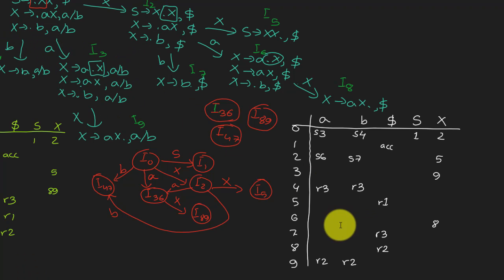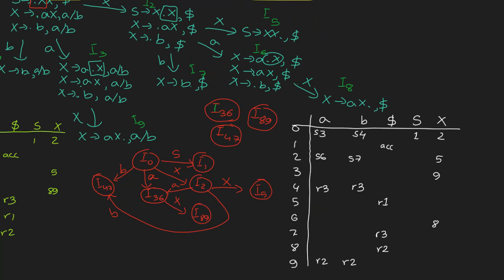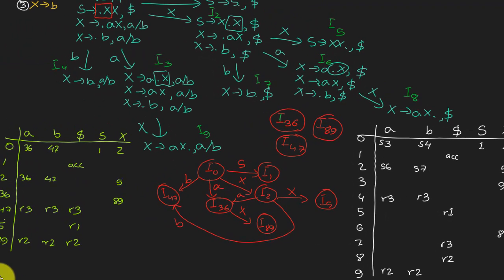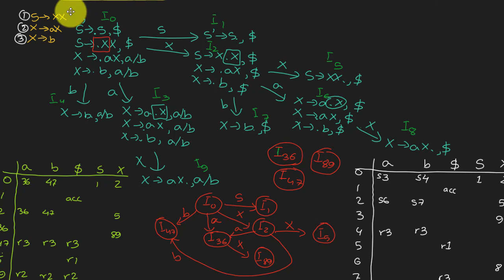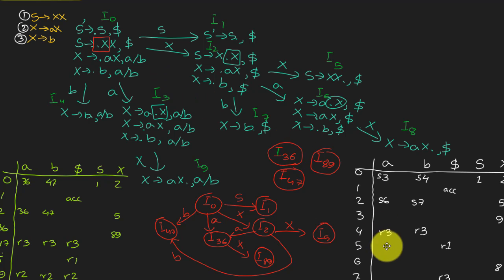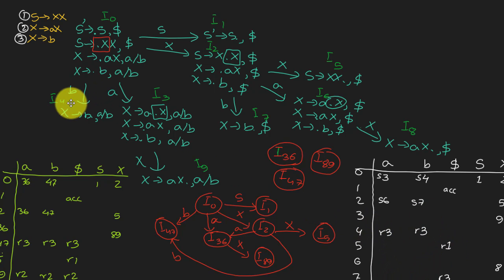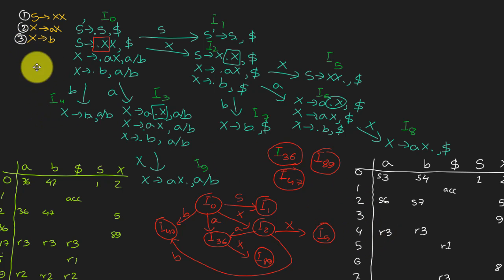Let's look at state 5. We number the rules like so — rule 1, R1, R2, R3, and so on. In state I5 the rule corresponds to rule 1. The look-ahead for state 5 is dollar, so under dollar we just put R1. Same goes for state 4 — the look-ahead is A and B, so under A and B we put R3.